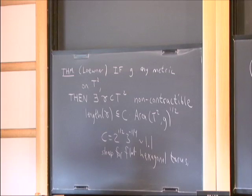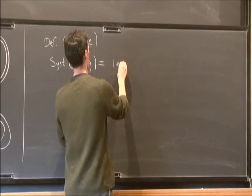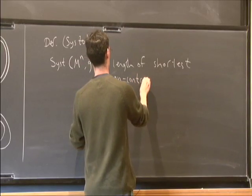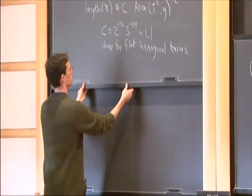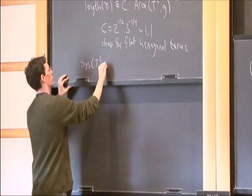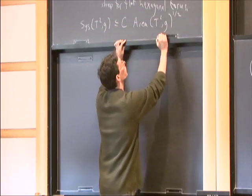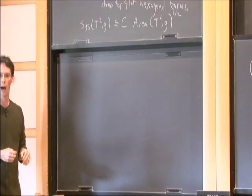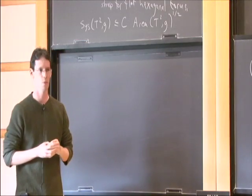There's one key definition in this field: the systole of a Riemannian manifold is defined to be the length of the shortest non-contractible curve. Using the word systole, Lovner's theorem says the systole of a two-dimensional torus is less than or equal to this constant times the area to the power of one-half. This was done in the late 40s, and it raised a natural question: whether something similar is true in higher dimensions. That question was open for a little more than 30 years, and the answer turns out to be yes.